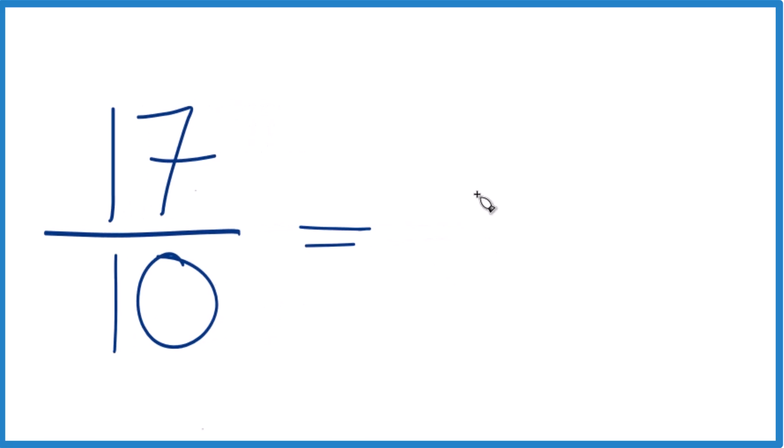10 goes into 17, well, one times 10, that's 10, and then we'd have seven left over. Just bring the 10th cross here, and 17 tenths, that equals the mixed number one and seven tenths.